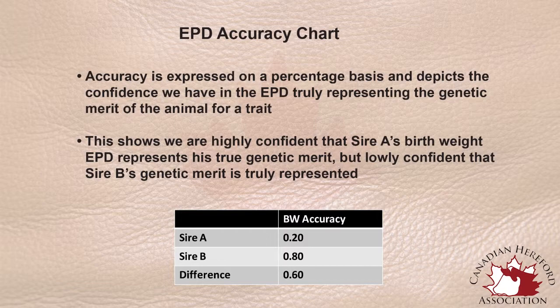Accuracy does change over time as long as the animal is used in a breeding program. We could have an animal that's born and never breeds a cow, and that accuracy won't change because we don't collect a lot of phenotypic information on its progeny later in life. If an animal is used on a large number of females throughout its lifetime, it is certain that its accuracy of breeding value is going to improve.